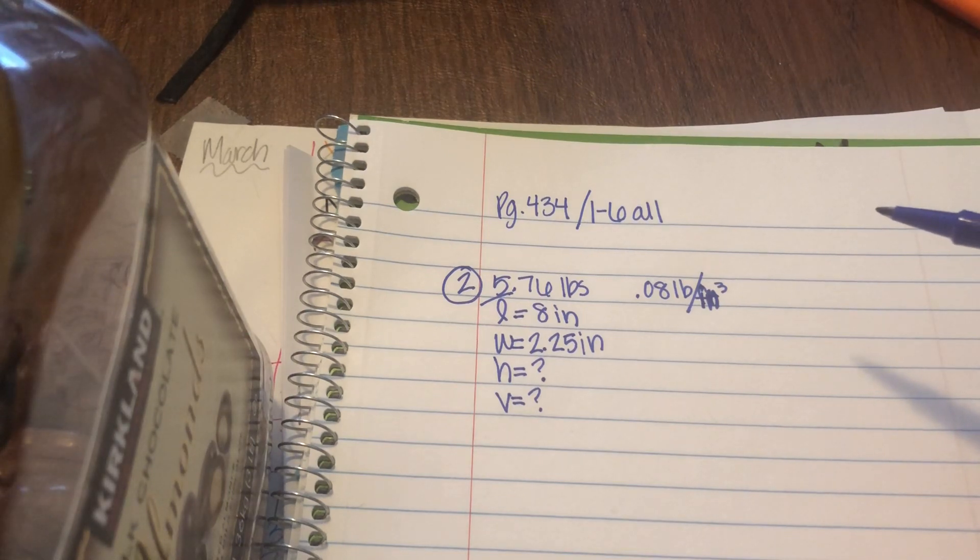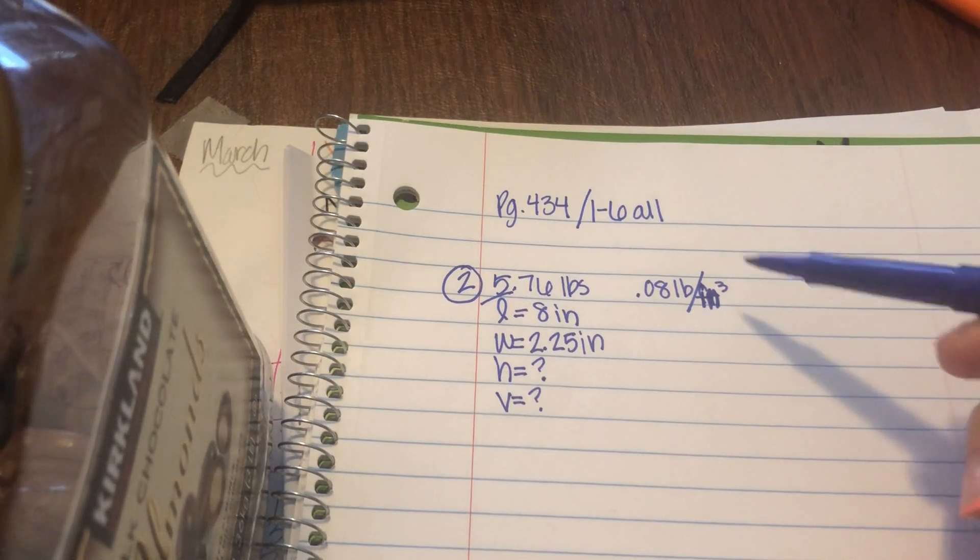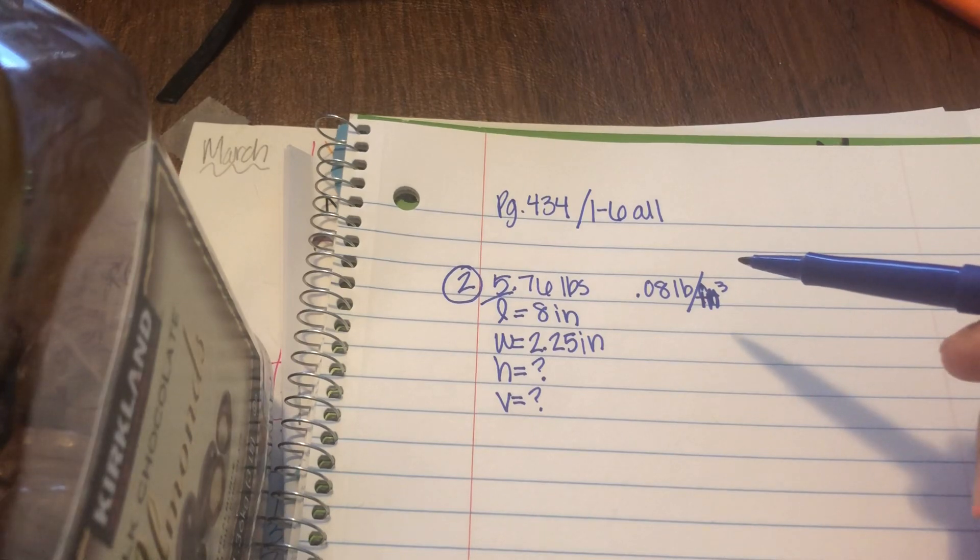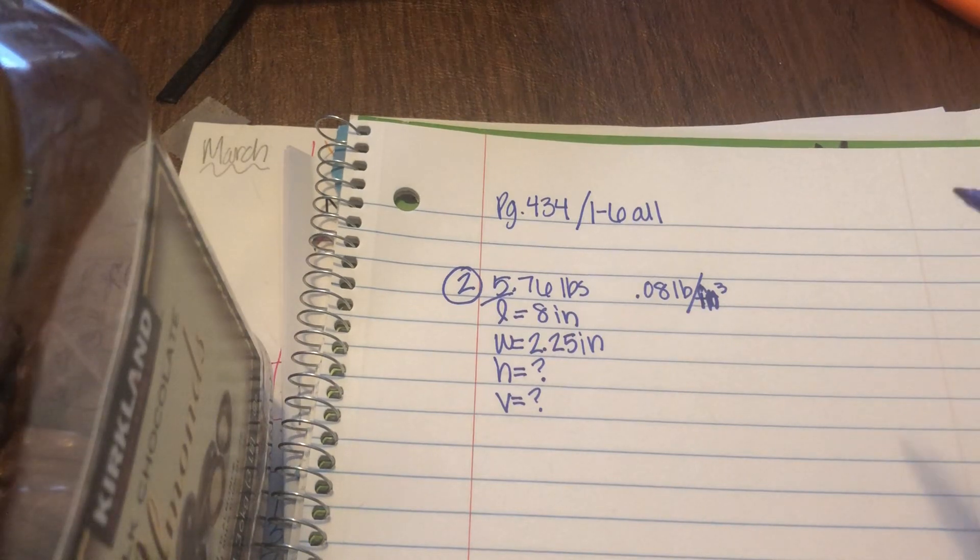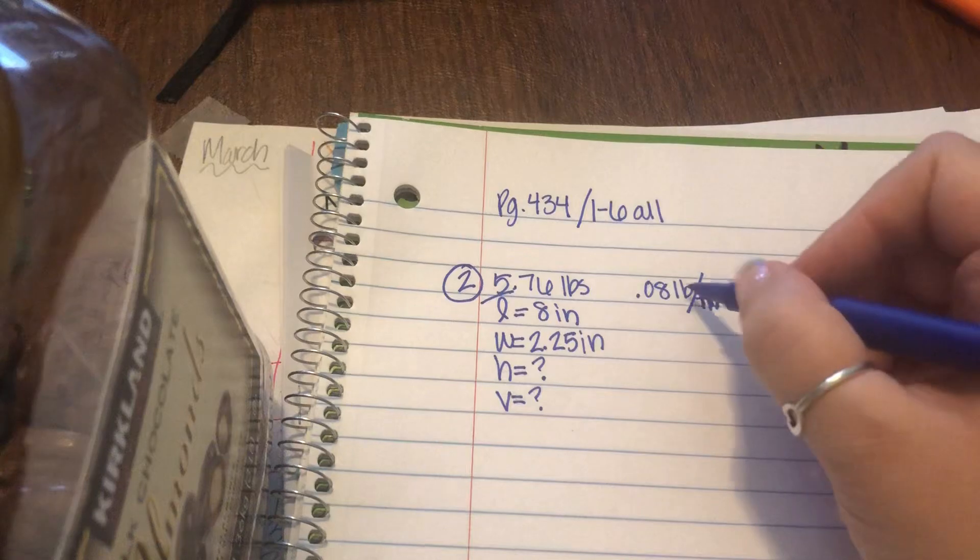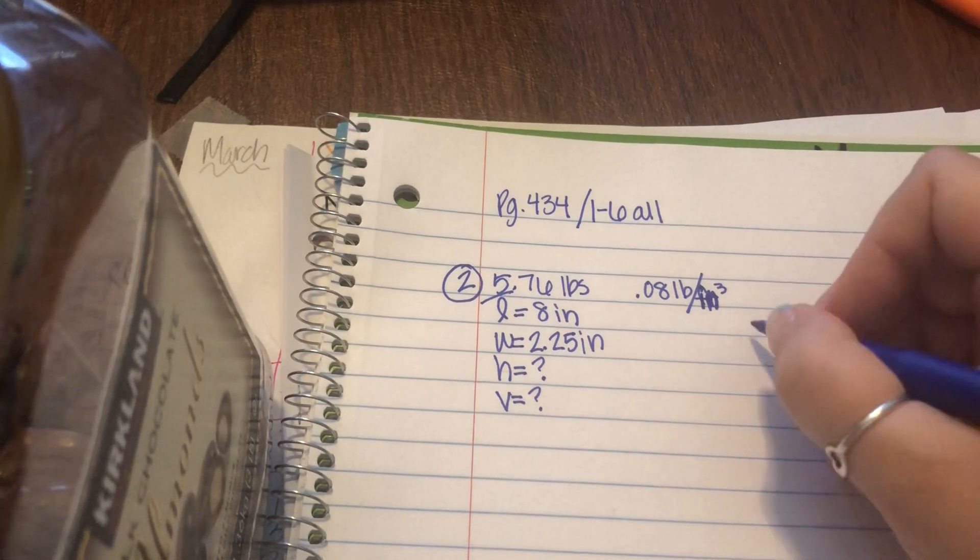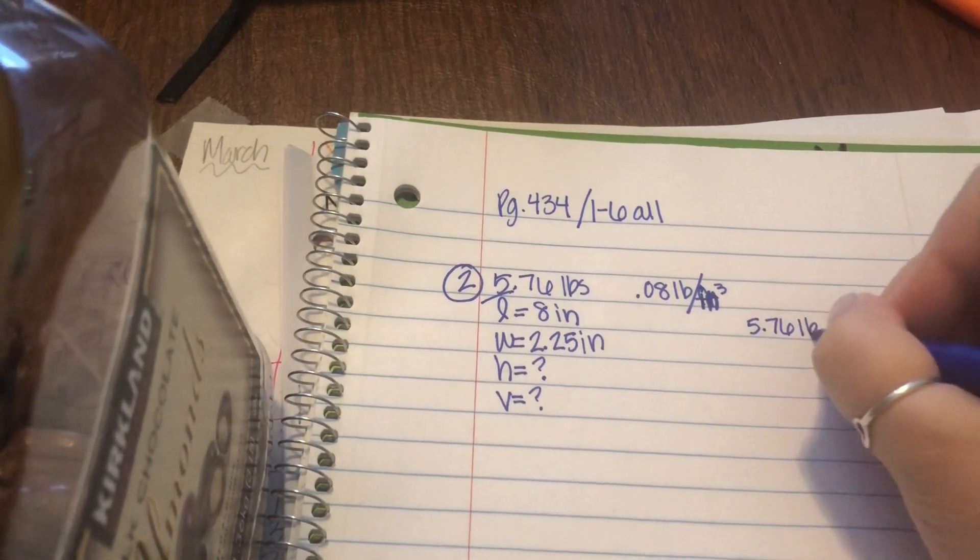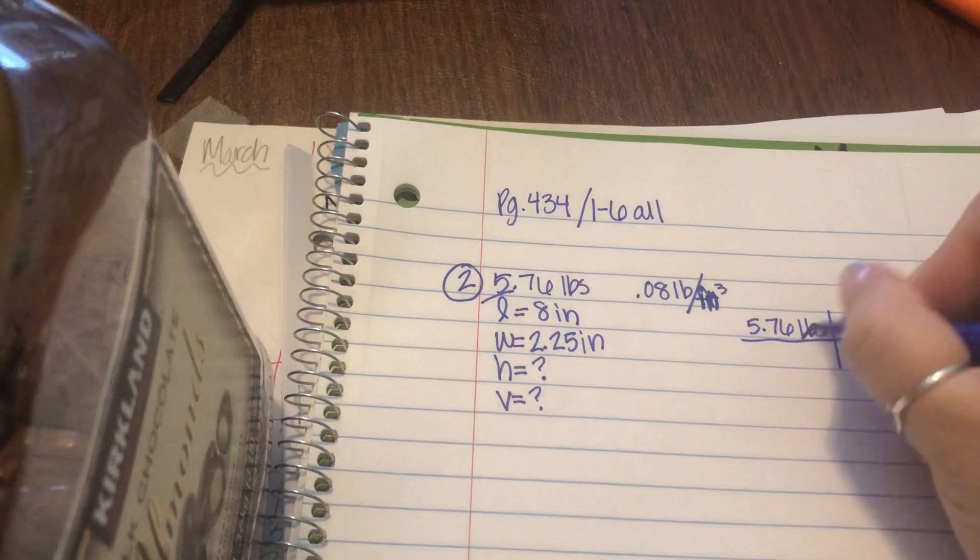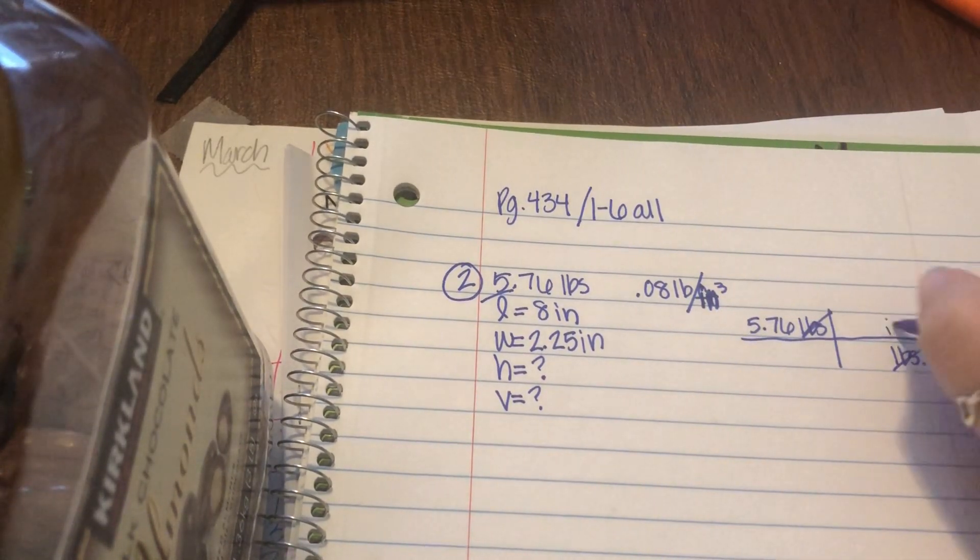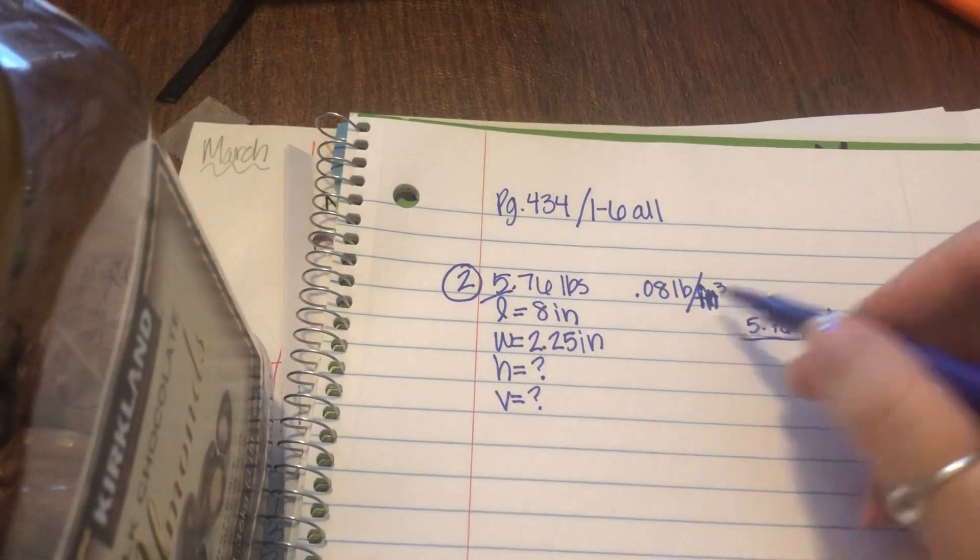Well, it tells me that it's 0.08 pounds per cubic inch. So that's probably something that I can use as a conversion factor. And they tell me that this is the total amount that it weighs. So I always start with the thing that gives you one singular unit. So this is one singular unit of just pounds, and then this is the one I use as the conversion one because it has two different units, pounds and cubic inches. So I'm going to start with 5.76 pounds. And then I'm going to want pounds to cancel. And what goes with pounds? It's pounds per cubic inch. So they said 0.08 goes with the pounds, and then per one cubic inch.